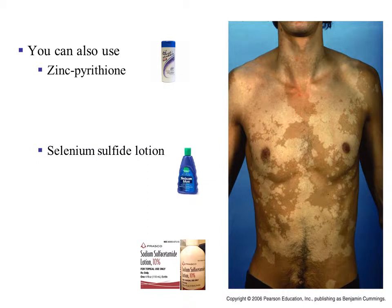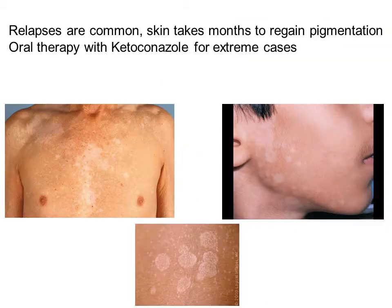You can also use some over-the-counter drugs such as Head & Shoulders and Selsun Blue. Head & Shoulders contains zinc, which will help inhibit and destroy the fungus, and Selsun Blue has selenium. Relapses are common and skin can take months to regain pigmentation. In extreme cases, you can take an oral drug called ketoconazole.